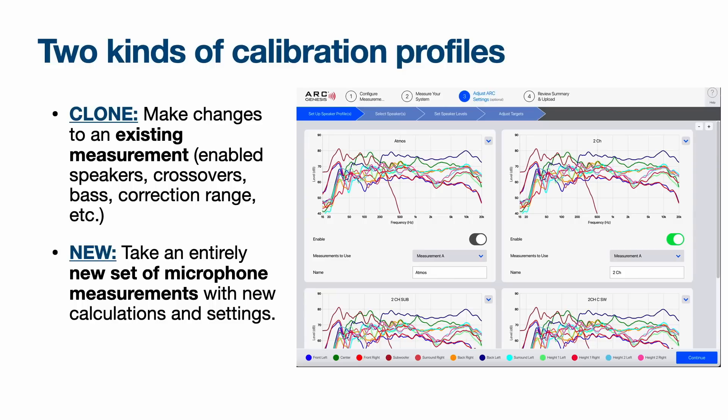There are two kinds of calibration profiles. The first is where you've done a single measurement and then clone it — whether that's five or eight microphone measurements — and then make changes like enabling or disabling speakers, changing crossovers, bass settings, or correction range. The second kind is doing an entirely new set of microphone measurements, such as moving the main listening position to the second row and doing five or eight measurements around that area.